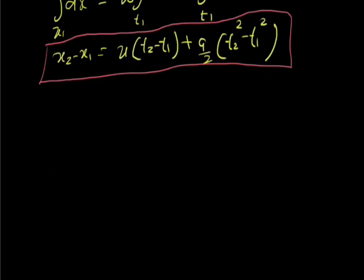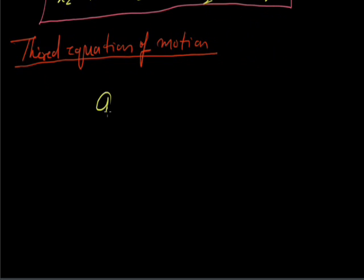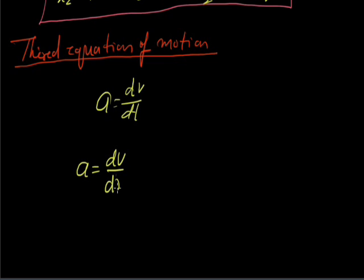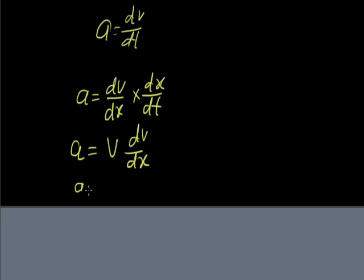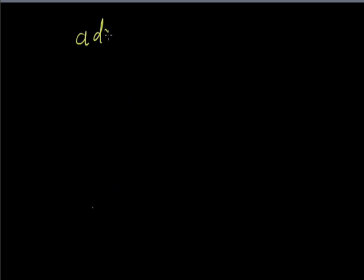Now for the third equation of motion: acceleration a equals dv by dt. Using the chain rule, a equals dv by dx times dx by dt, which equals v dv by dx. Therefore, a dx equals v dv.